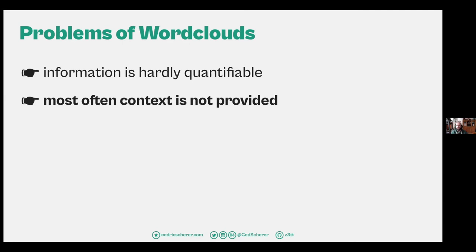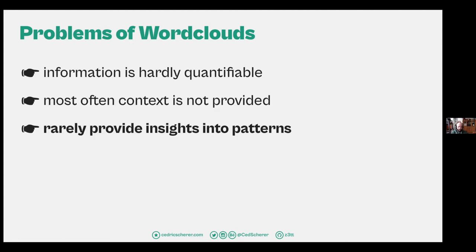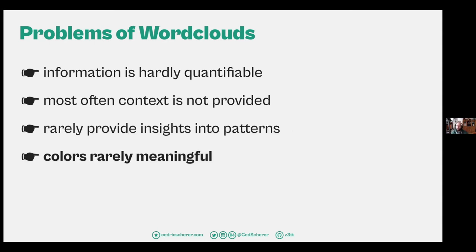Most often context is not provided with word clouds. There's rarely a classification in terms of sentiment. They rarely provide insights into patterns — what do I learn from it? Maybe there are three big words and I know they're common, but how do they interact? Are there hierarchies? Can they be grouped? And the colors are often not meaningful — just colored by size or randomly for aesthetic reasons.